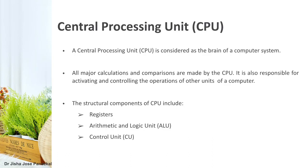Now we discuss the most important component of a computer — the central processing unit, abbreviated as CPU. It is considered the brain of a computer system. All major calculations and comparisons are made by the CPU, and it is also responsible for activating and controlling the operations of other units. It is also known as the processor. The structural components inside the CPU include registers, the arithmetic and logic unit (ALU), and the control unit.